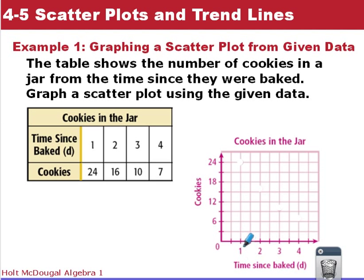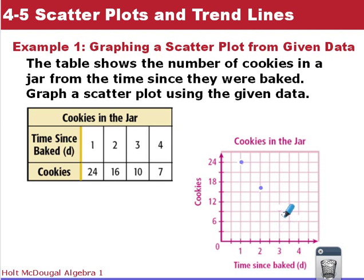On day one we have 24 cookies, so we plot our first point at one and 24. After two days we're down to 16 cookies. After three days we're down to 10 — those are delicious cookies! And after four days we have seven cookies left.